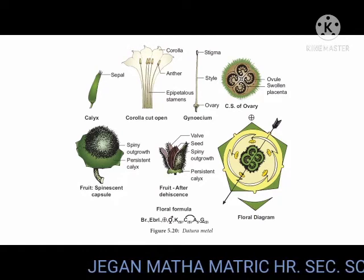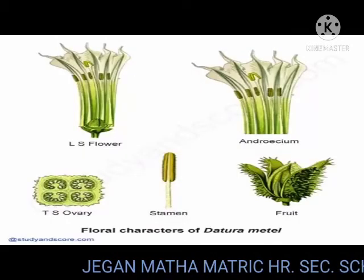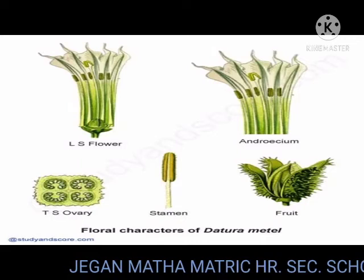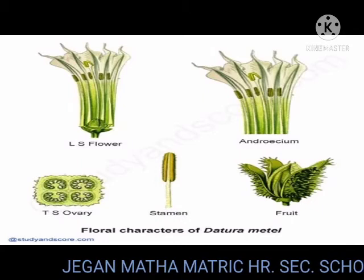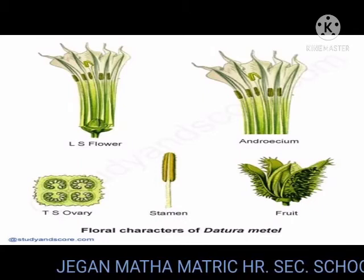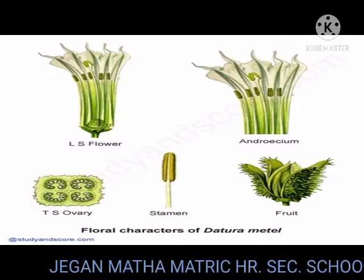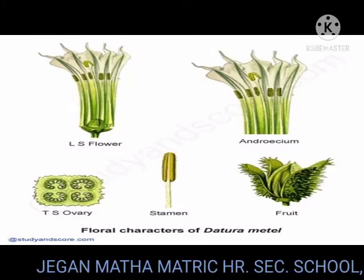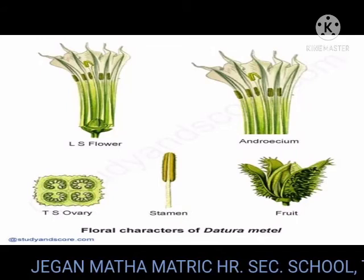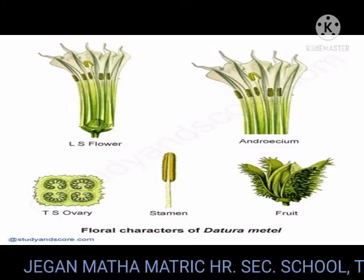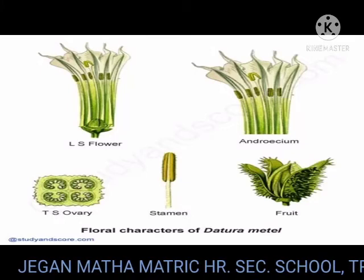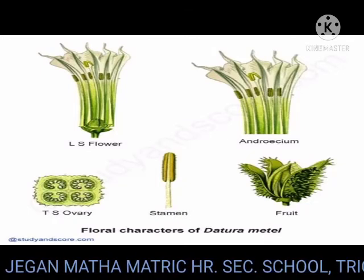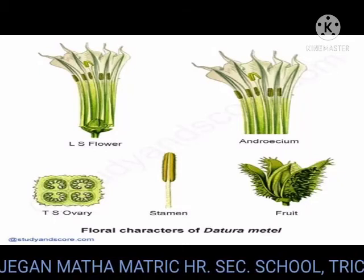Corolla: petals 5, greenish white, synpetalous. Epipetalous — that is, anthers are attached to the petals — alternipetalous and are inserted in the middle of the corolla tube. Anthers are basifixed, dithecous, with long filament, introrse, and longitudinally dehiscent.